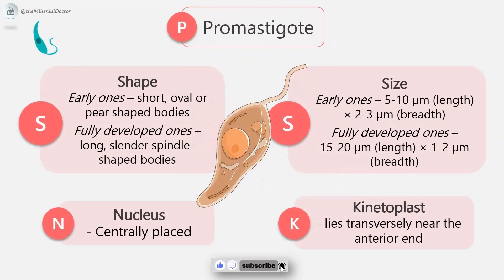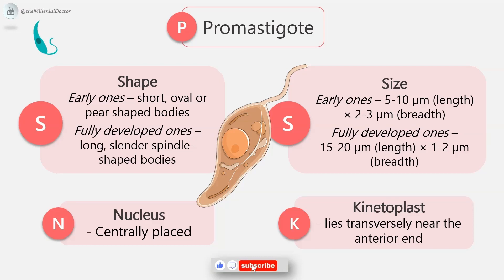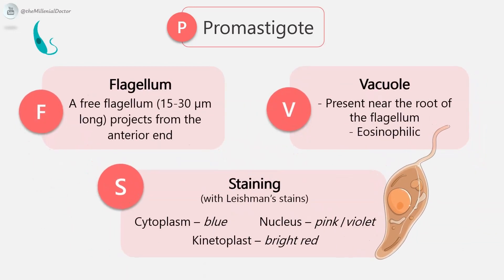The promastigote form is also called the flagellate form. It occurs in the digestive tract of the insect vector sandfly, or in laboratory culture. Early forms are short, oval or pear-shaped bodies measuring 5 to 10 micrometers in length and 2 to 3 micrometers in breadth. Fully developed forms are long, slender, spindle-shaped bodies measuring 15 to 20 micrometers in length and 1 to 2 micrometers in breadth. The nucleus is centrally placed, and the kinetoplast lies transversely near the anterior end.